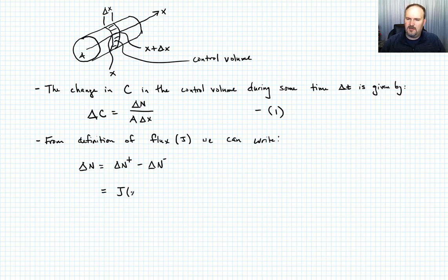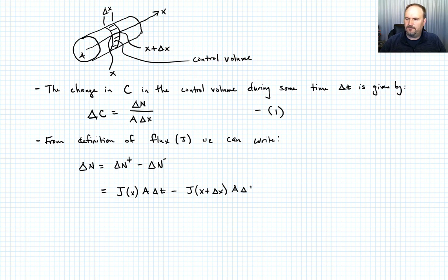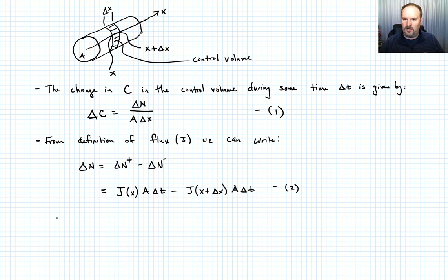Since flux is per unit area per unit time, delta N plus equals J evaluated at x times A times delta t. Delta N minus equals J evaluated at x plus delta x, times A times delta t. Let's call that Equation 2. Now we substitute Equation 2 into Equation 1.